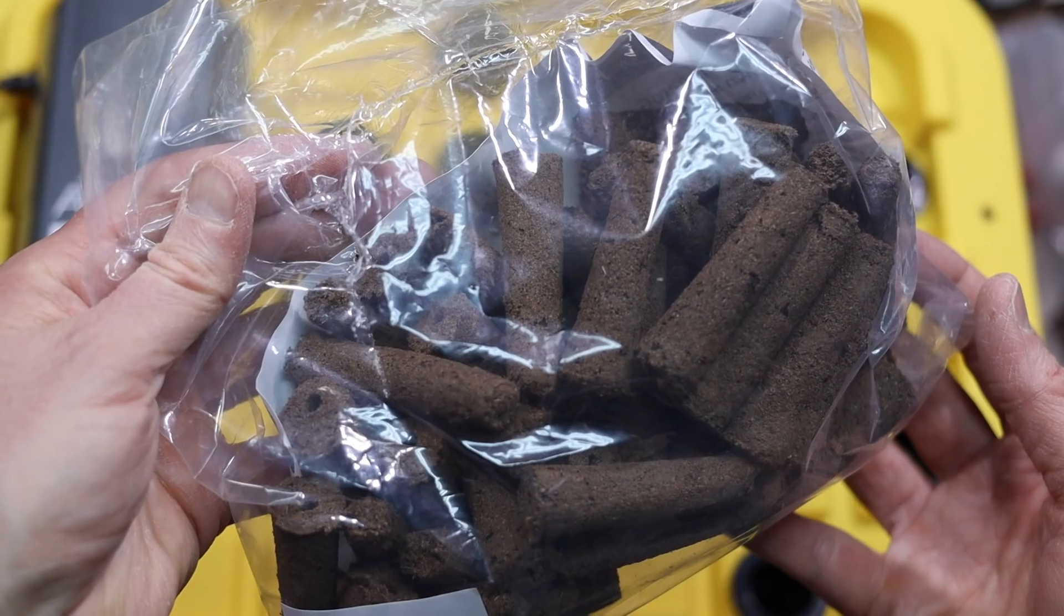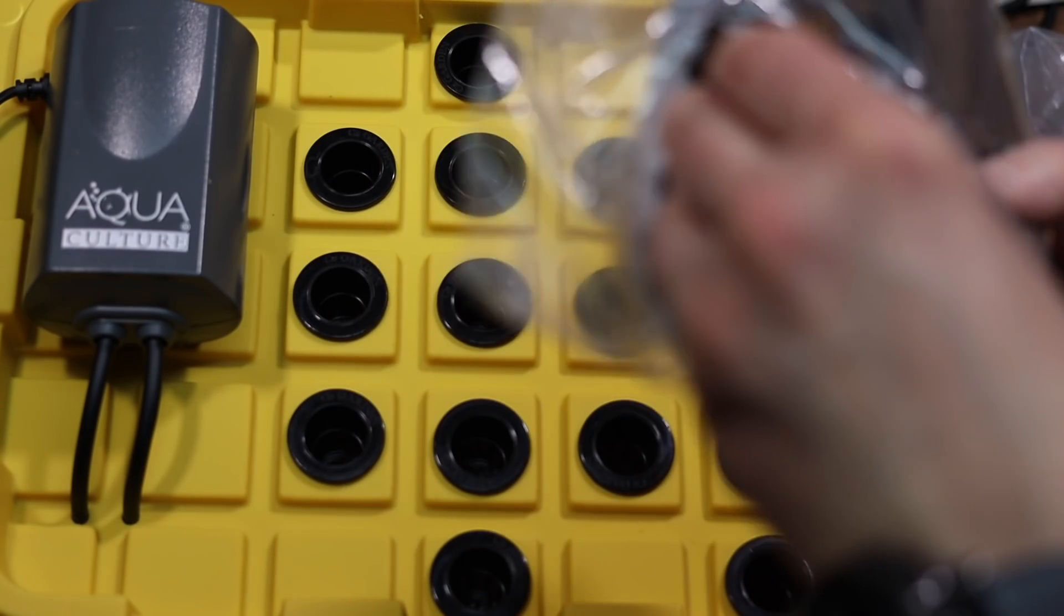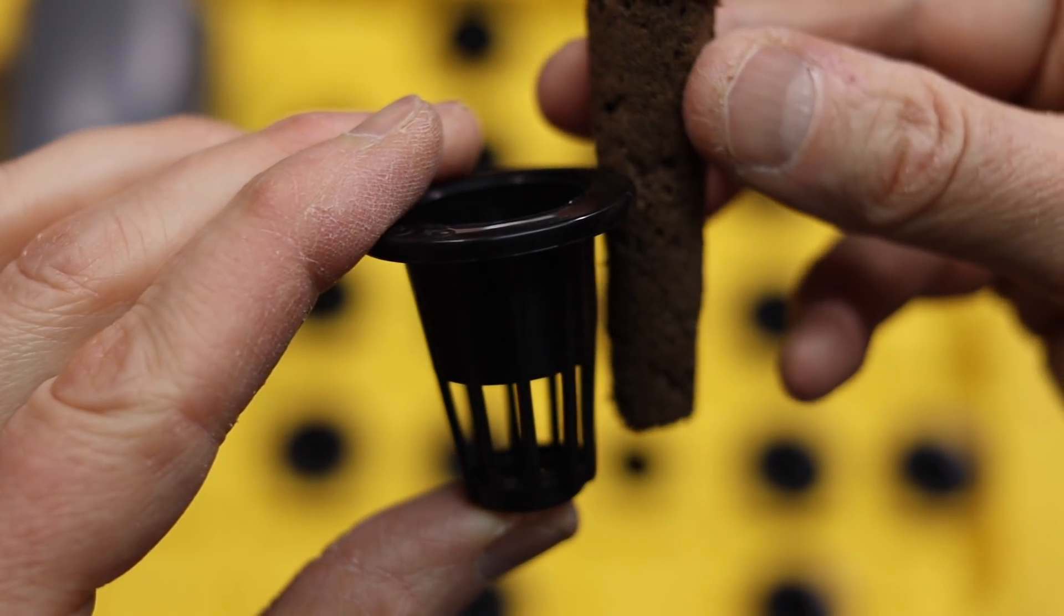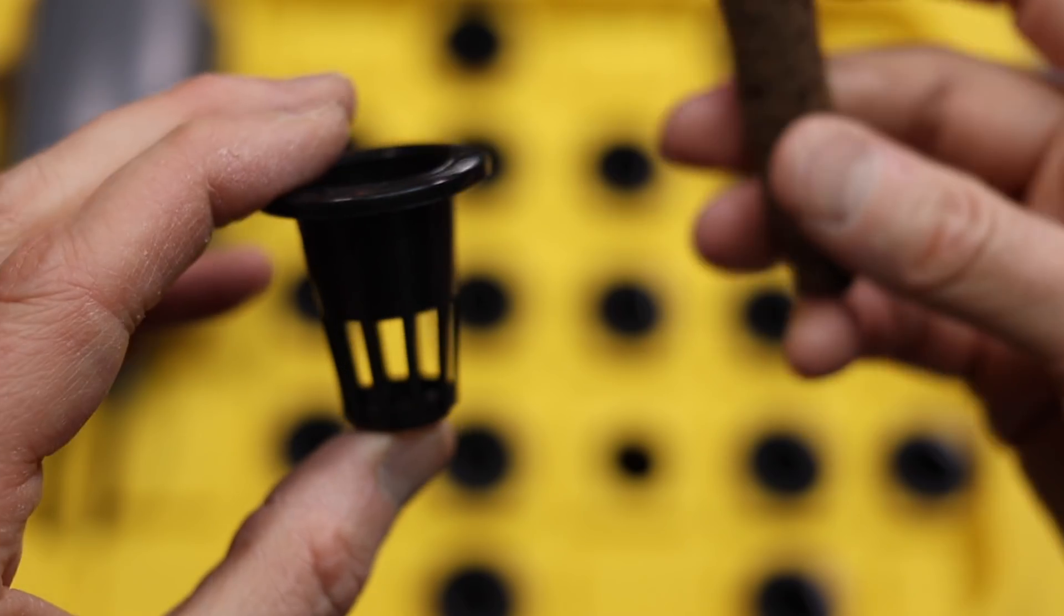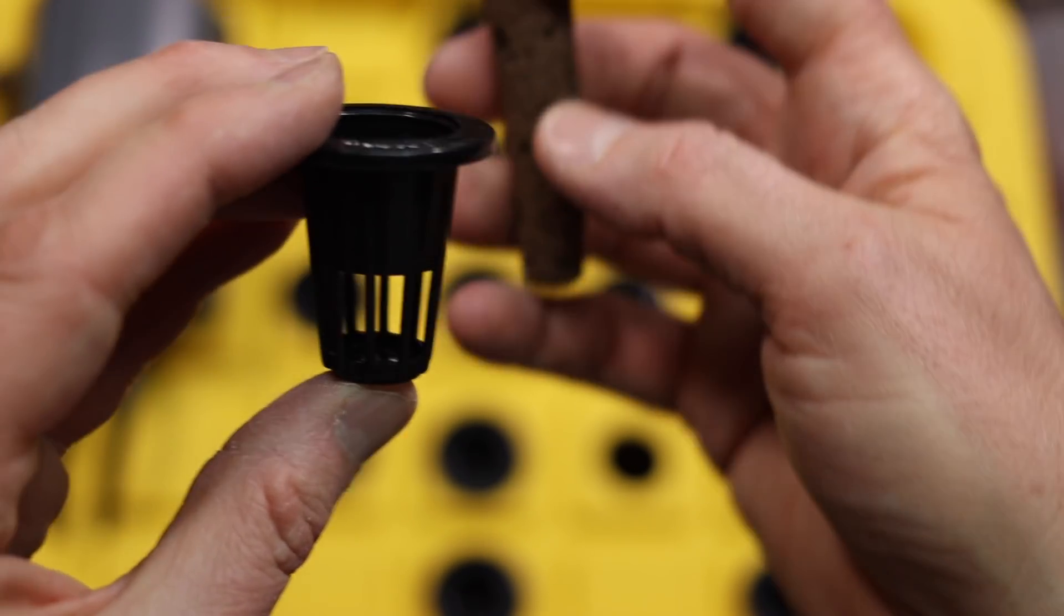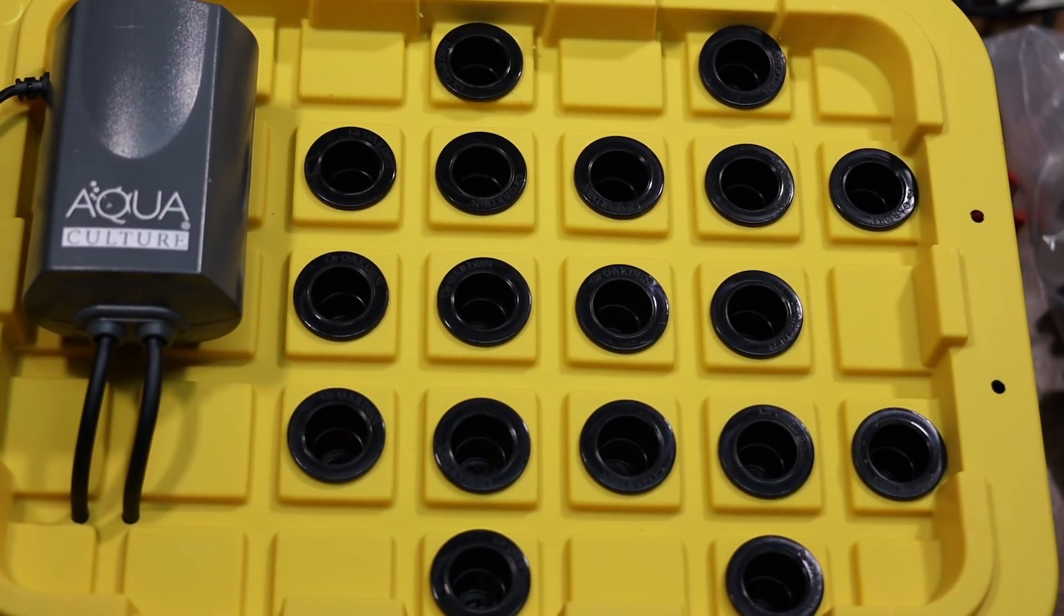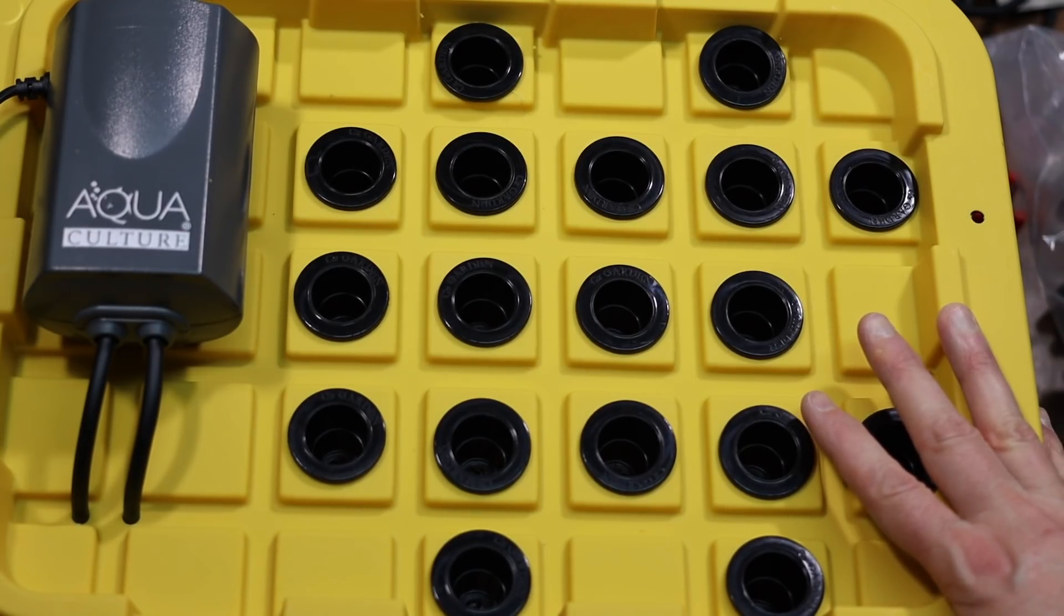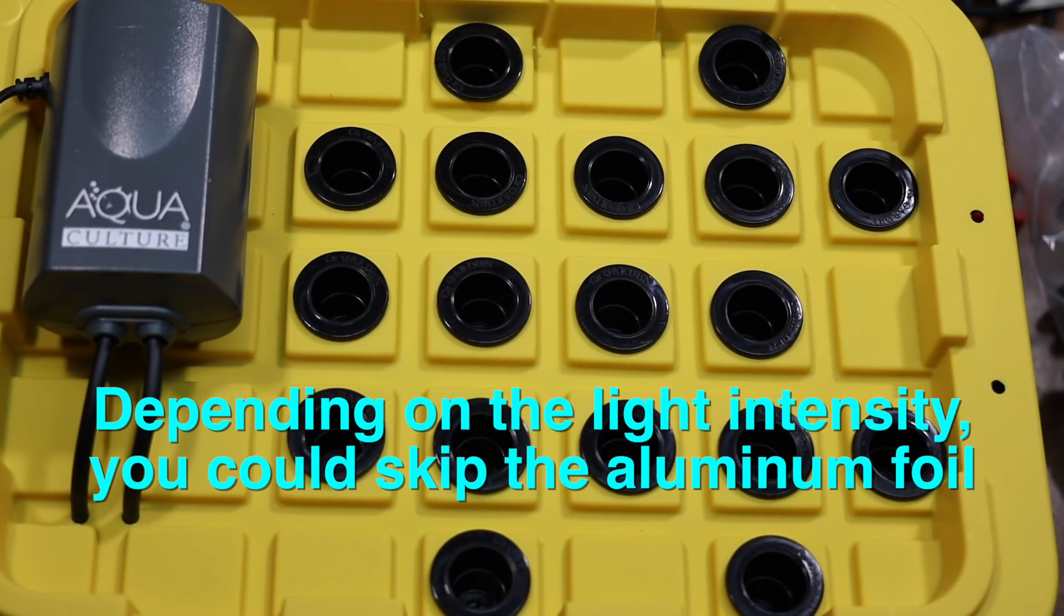Using the AeroGarden sponges, what I'm going to try to do, since these are so short, I'm going to try to cut these in half. Now I can spread my sponges out twice as much, so I want to try that to save on sponges. So what I need to do now, probably before doing anything, is cover the lid with aluminum foil just to block out light. Although for short term use, this is probably just fine.